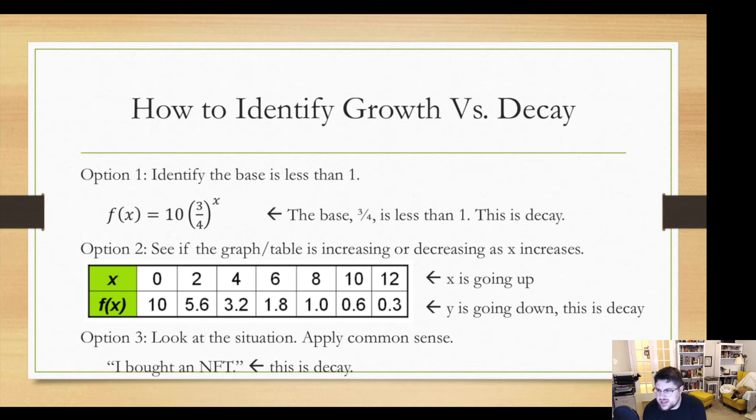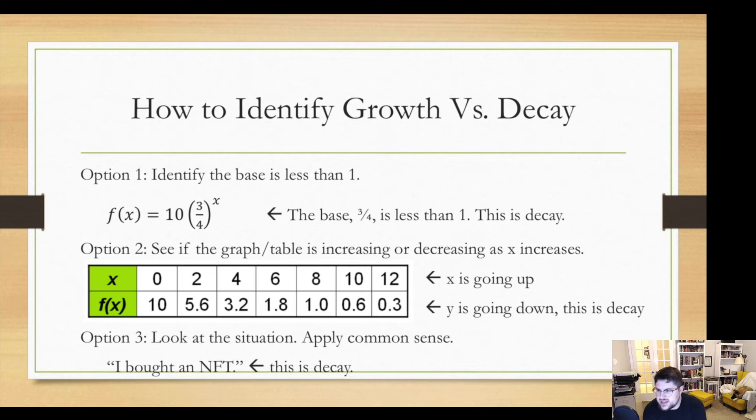So how do you identify growth versus decay? First thing is the basis. If we have equations, if your base is bigger than 1, it's growth. This base is 3 fourths, it's less than 1, so we have decay. Another thing we can use is a graph or a table. If as x goes up, y goes down, it's decay. If they both go up, then it's growth.